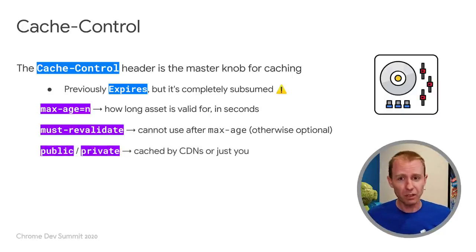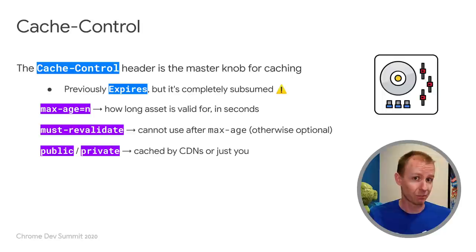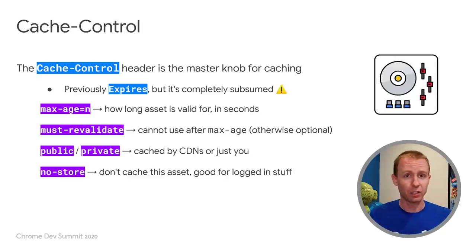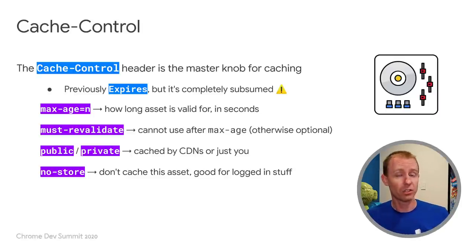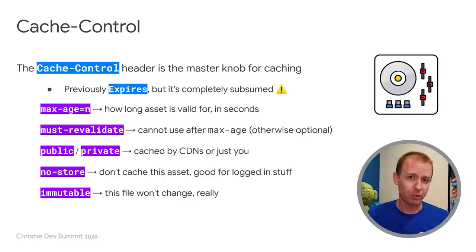Public and private go together — private is important when you're serving a logged-in page generated on the server that you don't want others to cache. NoStore actively disables caching — the client and any CDN along the way will completely ignore this file; the browser will never put this in storage. Lastly, immutable — which I'll explain more later — is something that should effectively be on by default, but it has a few nuances. I also mention Expires only to let you know you can ignore it — it's completely replaced by Cache-Control.